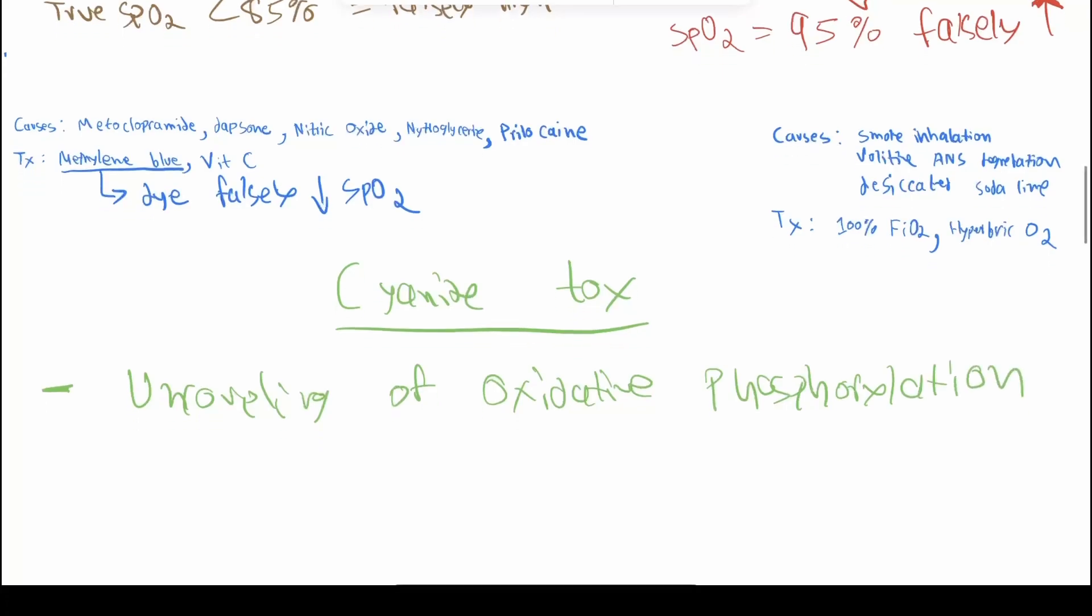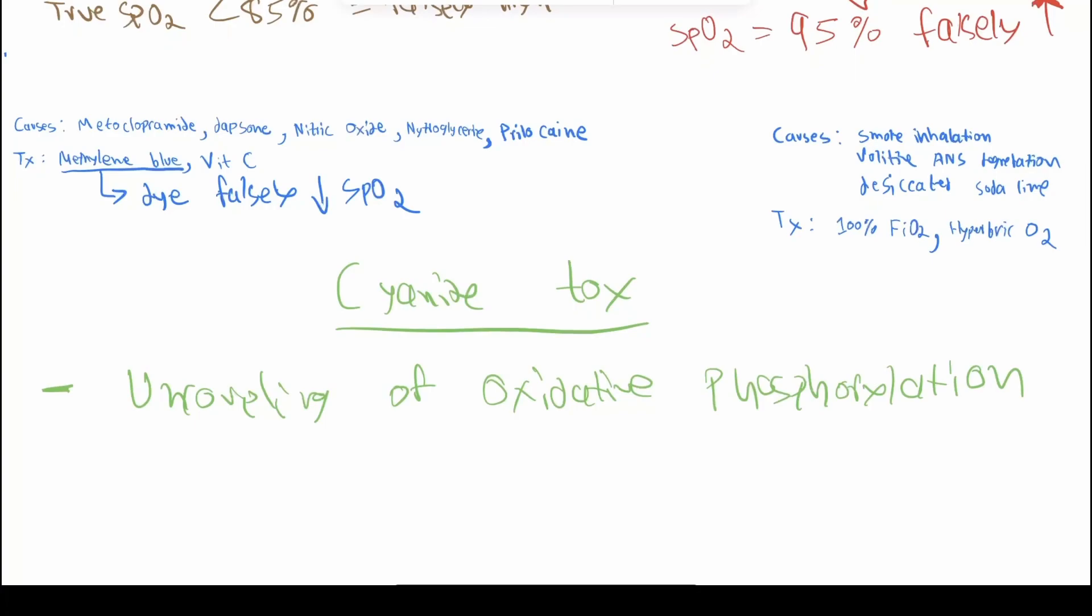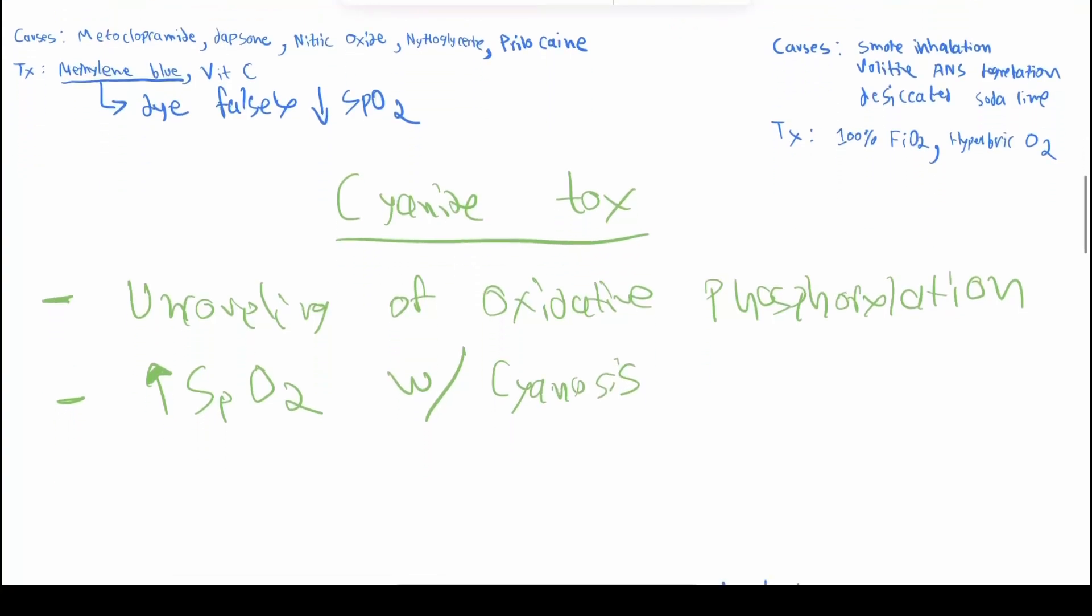The body is going to have trouble extracting the oxygen. The oxygen will still be in the blood. What this means is high SpO2 despite clinical cyanosis. And why is this special?